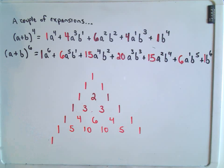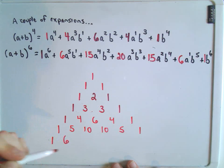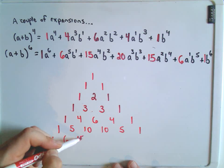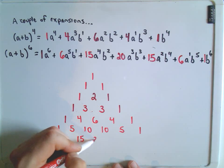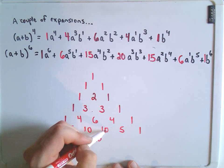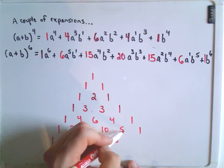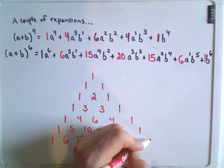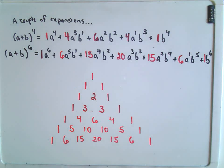Let's do maybe one more. So we'll stick a 1 off to the side. If we add 1 and 5, we get 6. If we add 5 and 10, we get 15. If we add 10 and 10, we get 20. If we add 10 and 5, we get 15. If we add 5 and 1, we get 6. And then we stick another 1 down there.